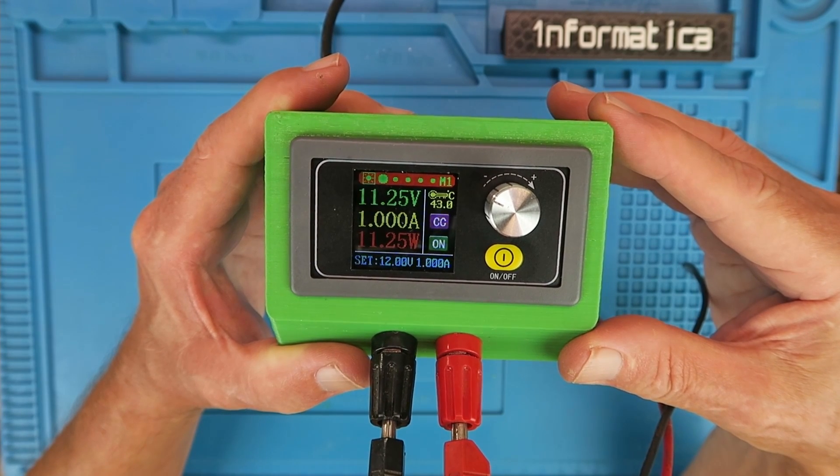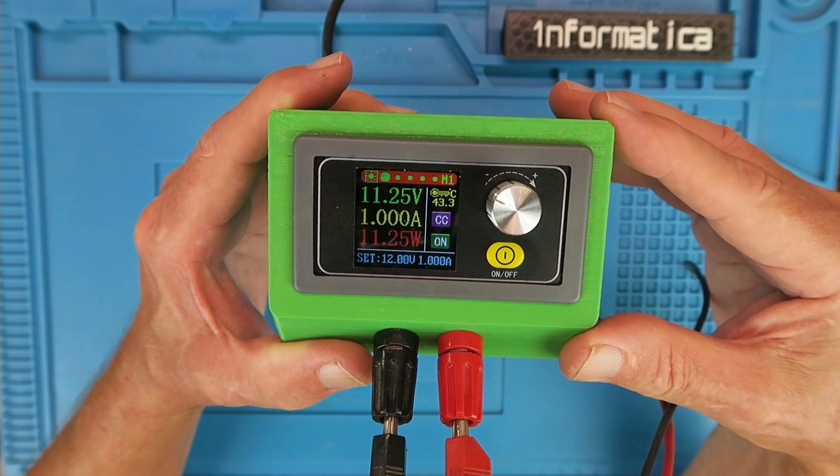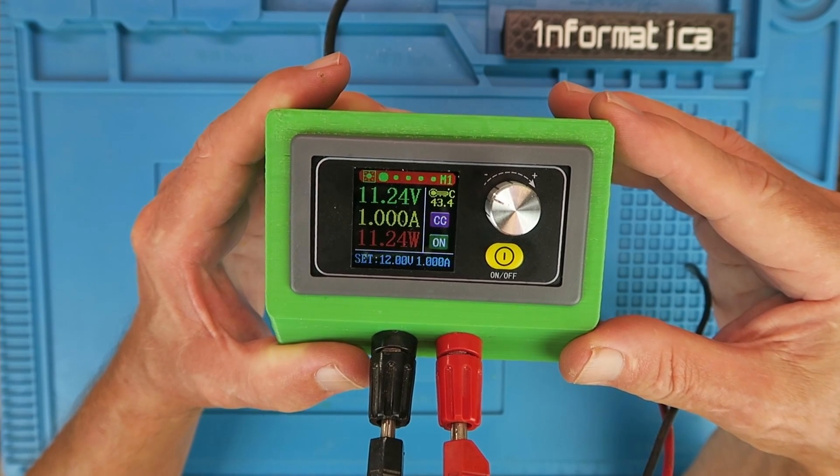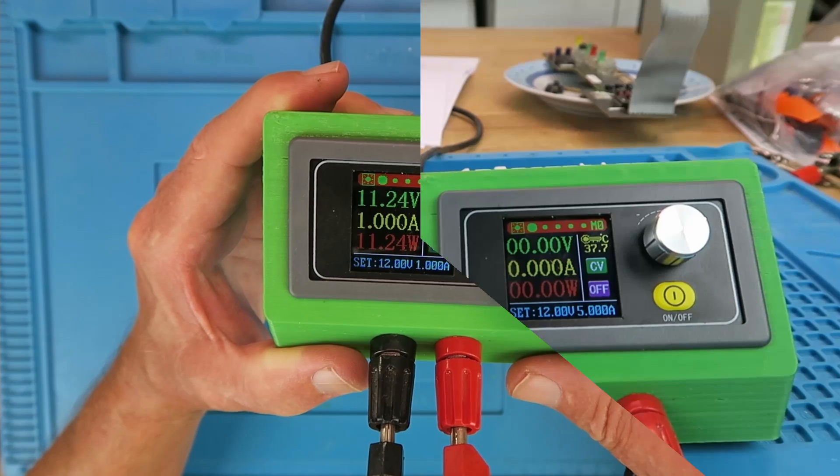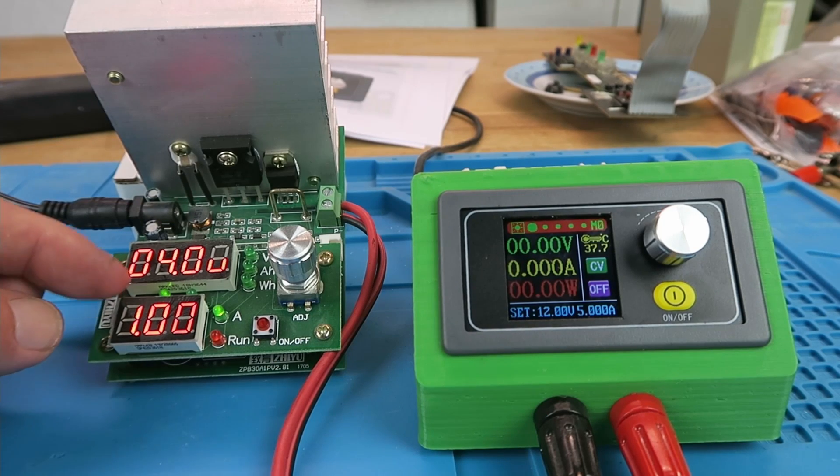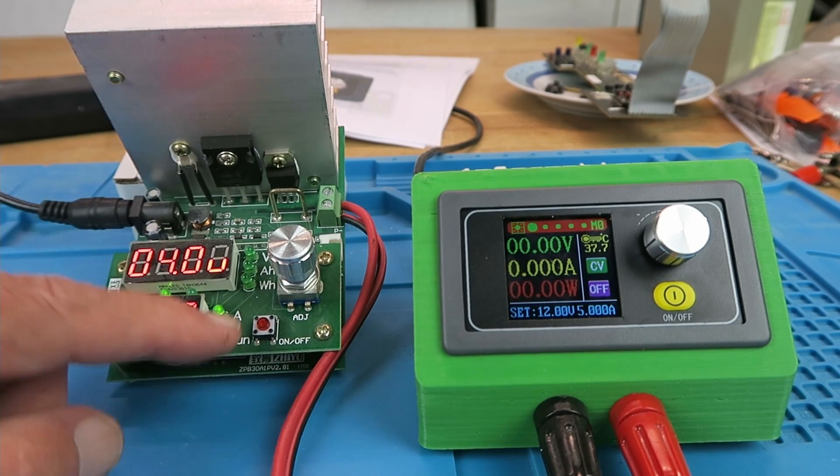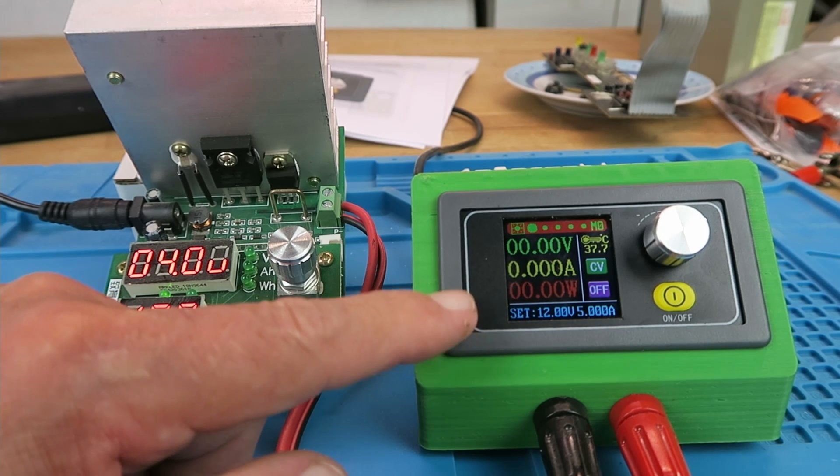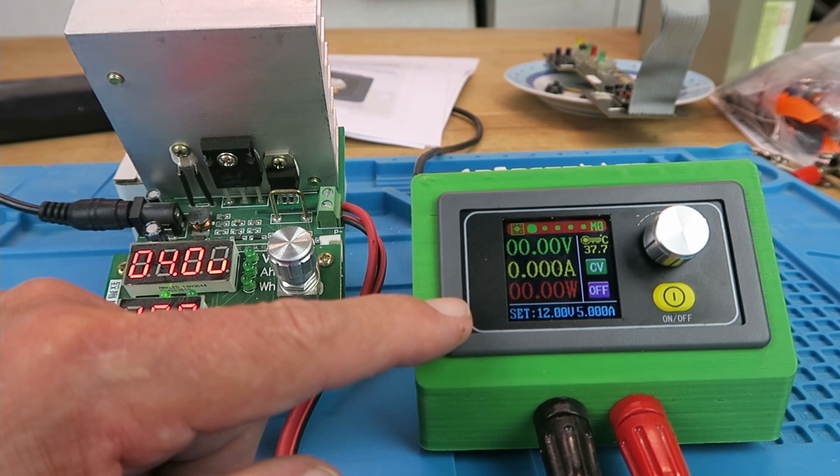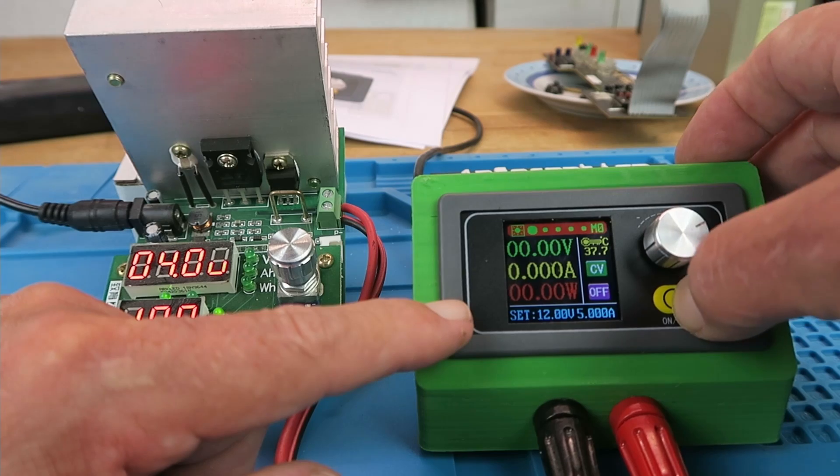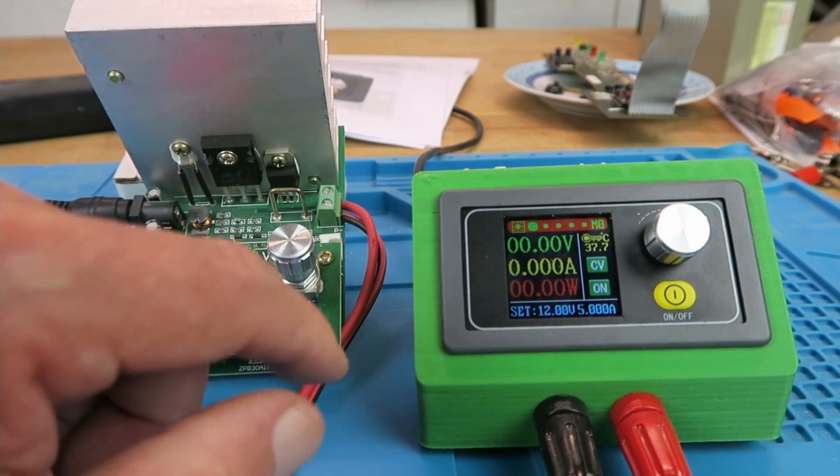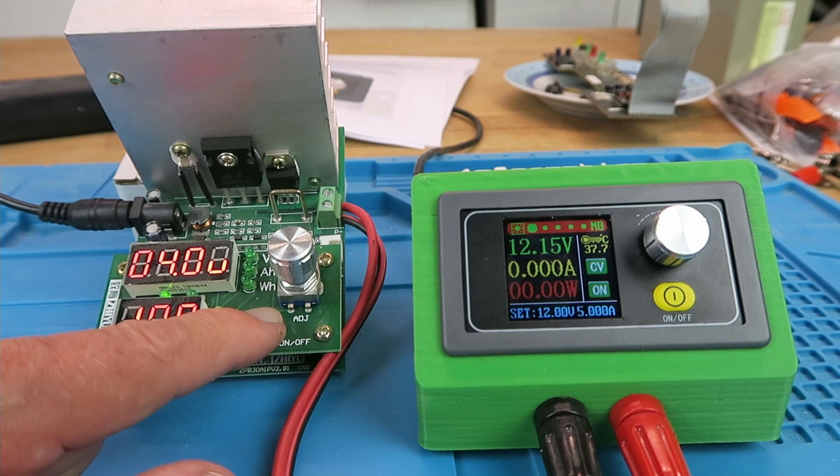Let's demonstrate that now by changing the LED out for my DC load. My DC load is set for 1 amp at the moment. Not switched on. This is the same setting at 12 volts at up to 5 amps. If I switch that on now, nothing happens until I switch the load on as well.